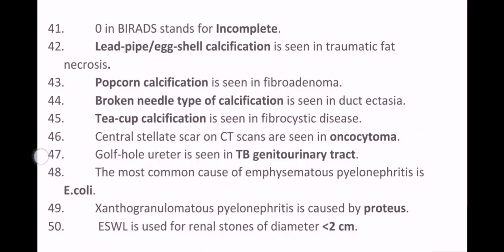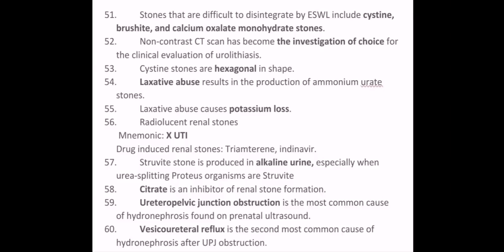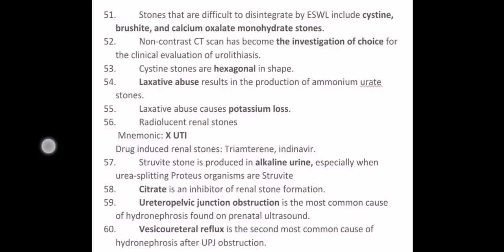Golf ball ureter is seen in TB of the genitourinary tract. The most common cause of emphysematous pyelonephritis is E. coli. Xanthogranulomatous pyelonephritis is caused by Proteus. Extracorporeal shockwave lithotripsy is used for renal stones of diameter less than 2 cm. Stones that are difficult to disintegrate by ESWL include cystine, brushite, and calcium oxalate monohydrate stones.